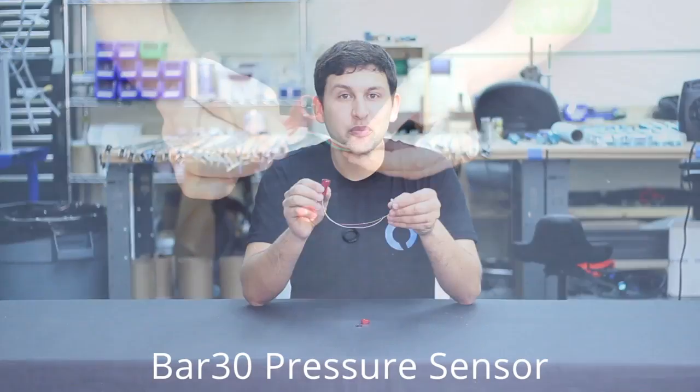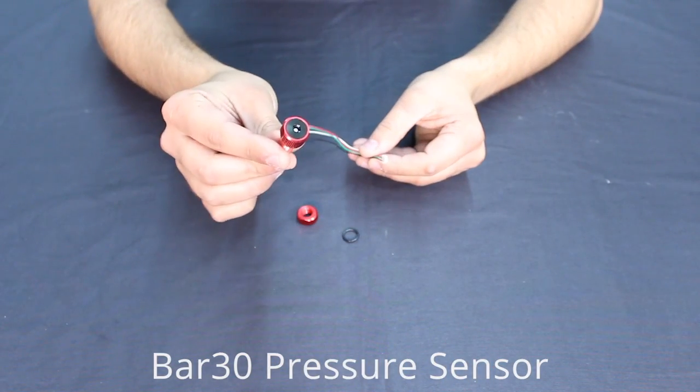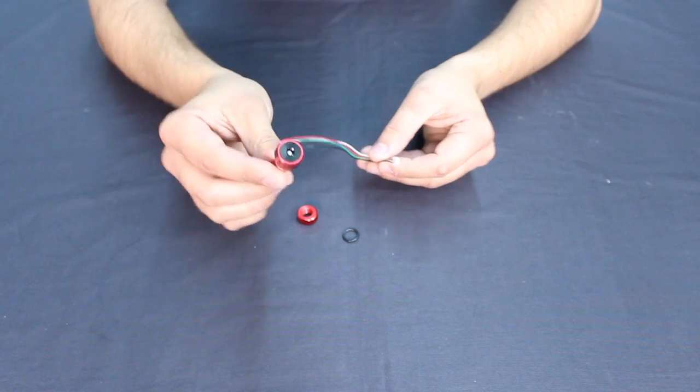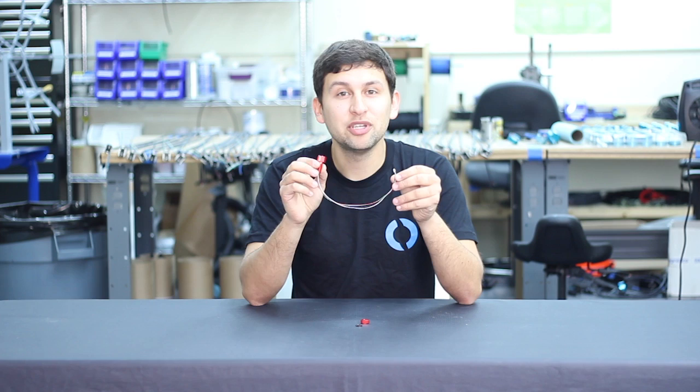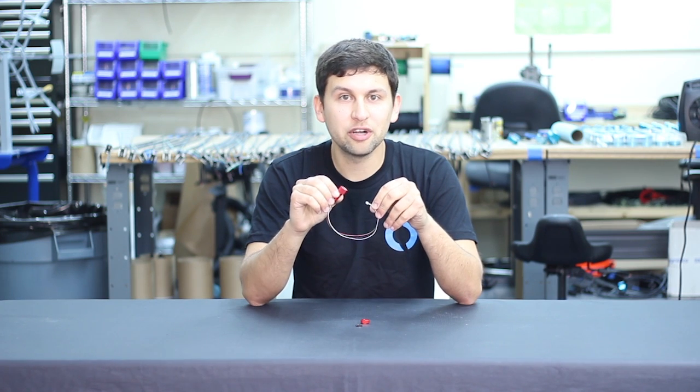The BAR-30 pressure sensor, as its name implies, can measure to 30 bar of pressure, or just over 300 meters of water depth. The sensor measures with a resolution of 0.2 millibar, which is enough to measure just 2 millimeters of change in the water column.